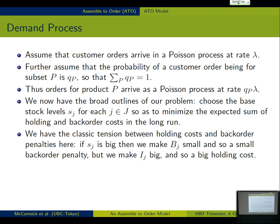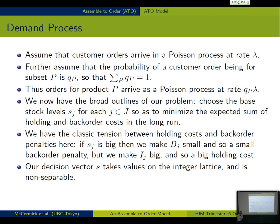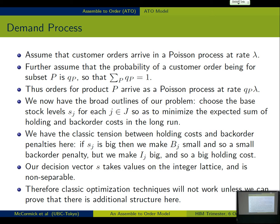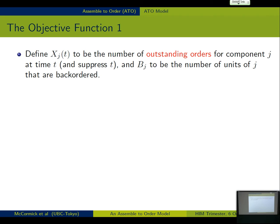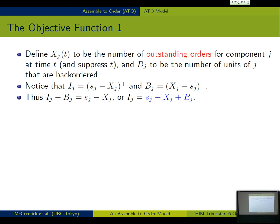So our decision vector S is going to take values on the integer lattice, and it's non-separable because of this interaction. So we can't use classic optimization techniques unless we prove that there's some additional structure. Okay, so let's think about what the objective function looks like. X of t is going to be the number of outstanding orders, and d_j is the number of units of component j which are backordered.